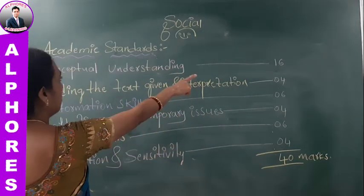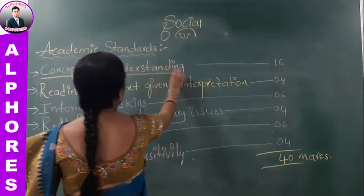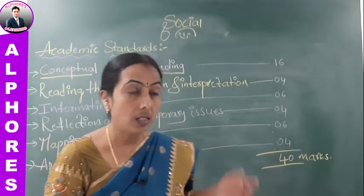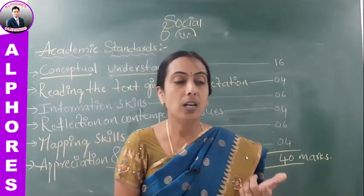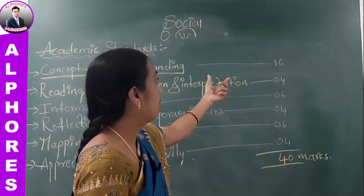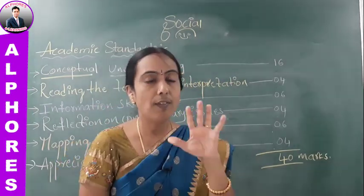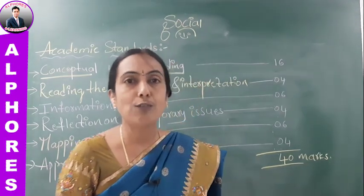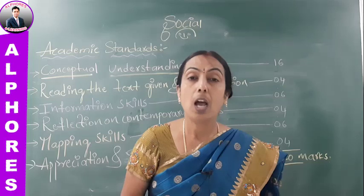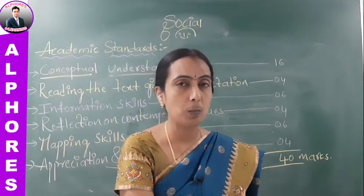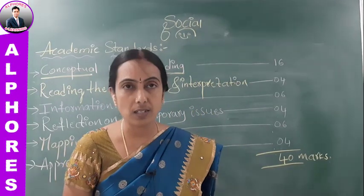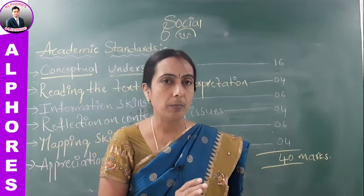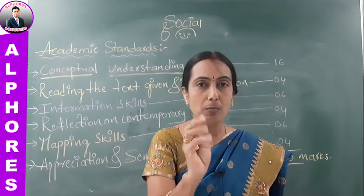Let me start with conceptual understanding questions. In the 16-marks category, nearly 11 marks can be expected in descriptive format, and five marks will be asked in choose-the-correct or fill-in-the-blanks objective format. The first question from lesson one is: 'How can you say that man himself is responsible for the present environmental crisis?' This lesson starts with this topic, and it is a long answer question.